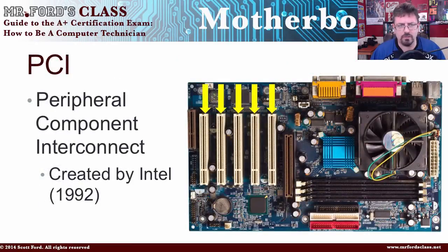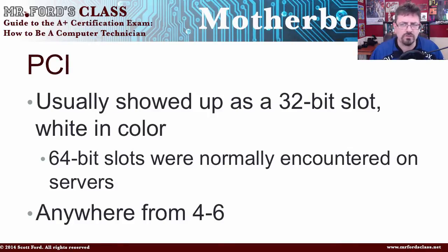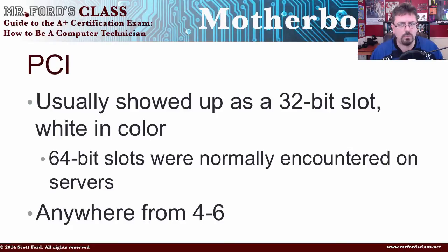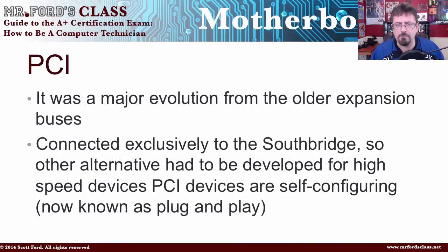The first one I want to take a look at is PCI. You should remember these from previous videos. PCI stands for Peripheral Computer Interconnect. It was created by Intel back in 1992, and it usually showed up as a 32-bit slot, white in color. There was a 64-bit slot, but you normally encountered that on a server — computers designed for networking applications, sharing, managing networking. You could have anywhere between four to six PCI slots on a motherboard. It was definitely a major step in the evolution of the motherboard — much faster and much more flexible than the older expansion buses.